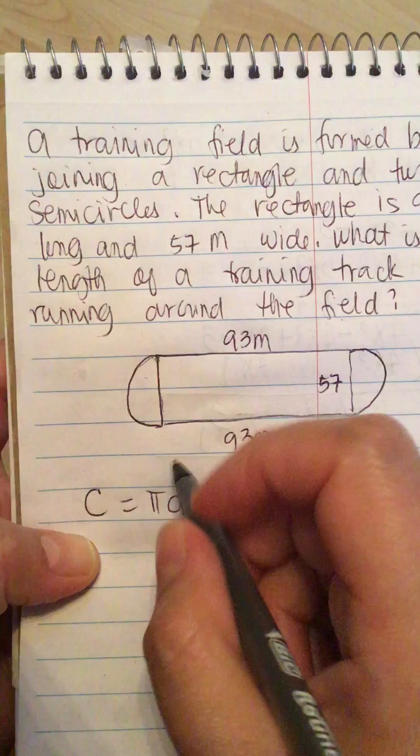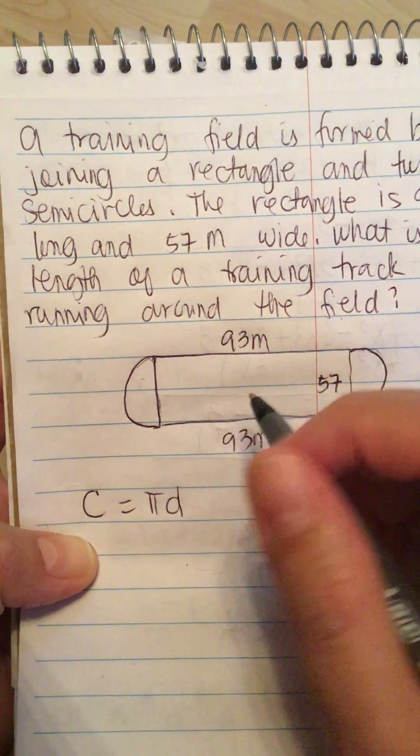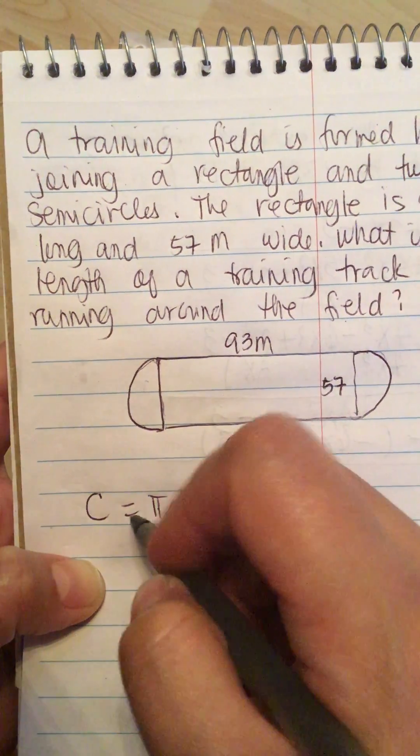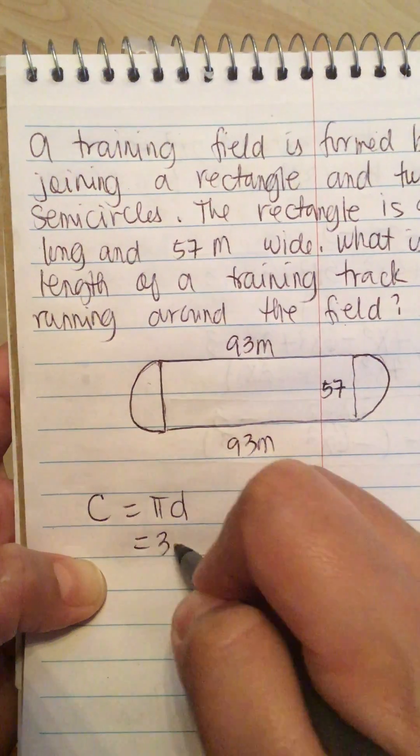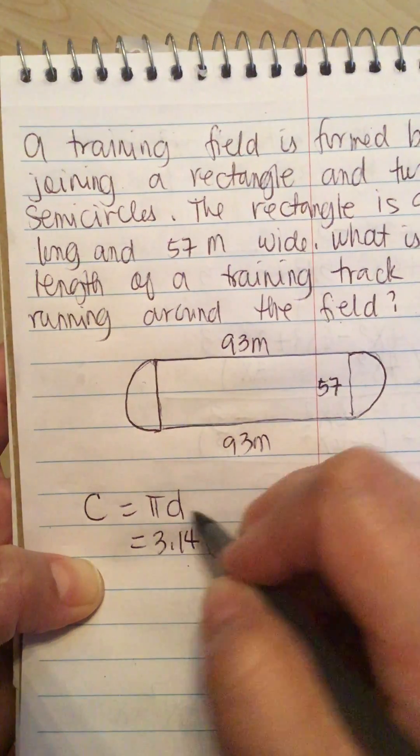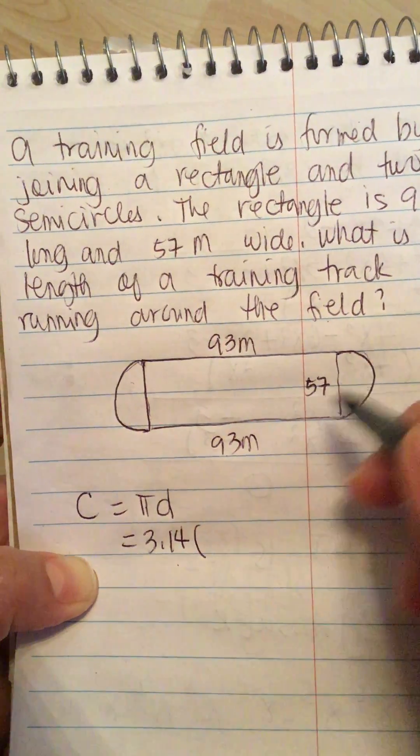...said to use 3.14 for π. So this is 3.14 times the diameter, which is 57.